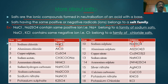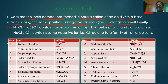If any two or more salts have the same positive or negative radicals, they belong to a salt family. For example, NaCl and Sodium Sulphate have the same positive ion Na+, so they belong to the family of sodium salts. Similarly, Sodium Chloride and Potassium Chloride have the same negative ion Cl-, so they belong to a family of chloride salts.